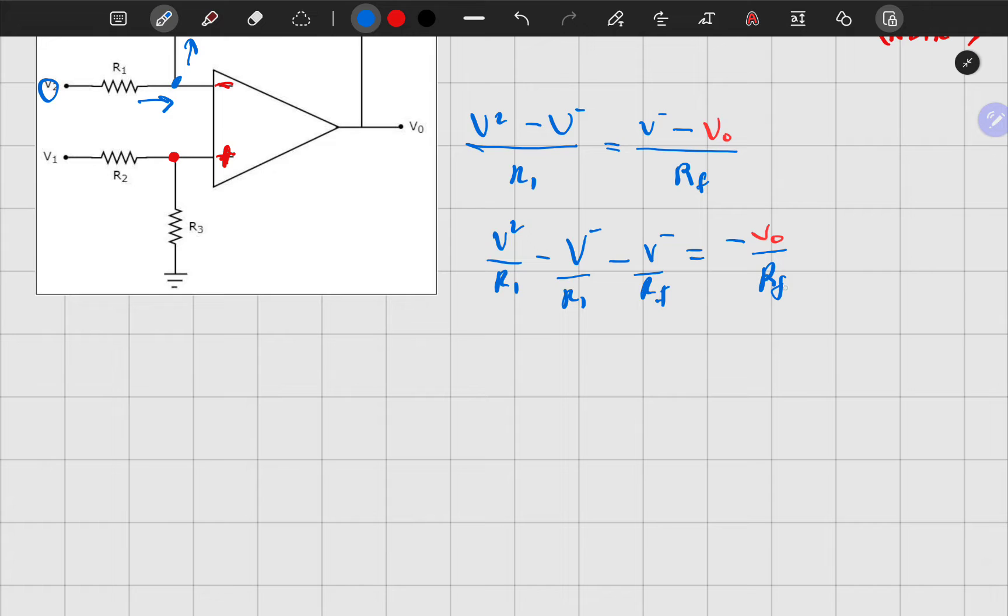You could multiply by RF throughout. So this is RF all over R1 minus RF all over R1 minus RF all over RF.